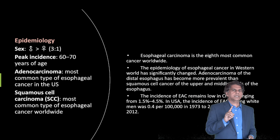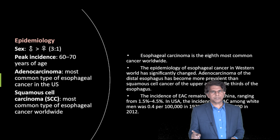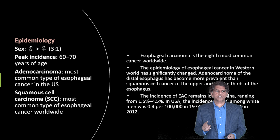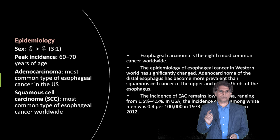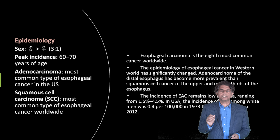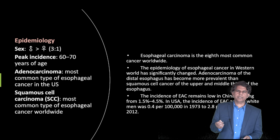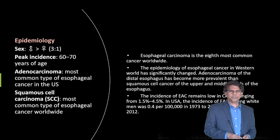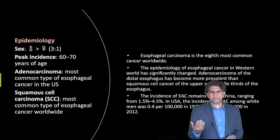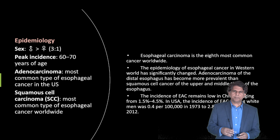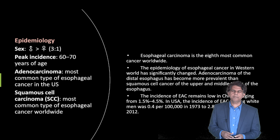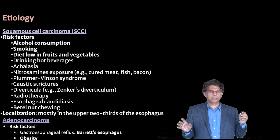Looking at epidemiology: adenocarcinoma is the most common type of esophageal cancer in the United States, while squamous cell carcinoma is the most common type worldwide. The incidence in China ranges from 1.5 to 4.5 percent. In the USA among white populations it is about 0.4 per hundred thousand. The peak incidence is anywhere from 60 to 70 years of age.